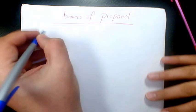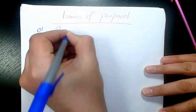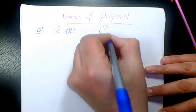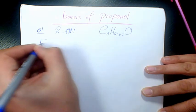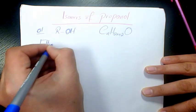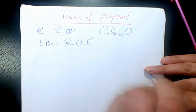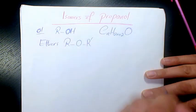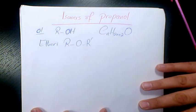Propanol is an alcohol because it ends with O-L, and alcohols connect to O-H. The general formula is CnH2n+2O. On the other hand, we have ethers, and ethers are R connected to O and another alkyl group. They have exactly the same general formula as well, so ethers and alcohols are basically isomers.